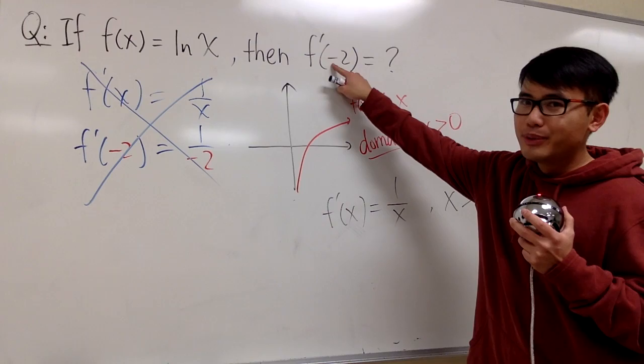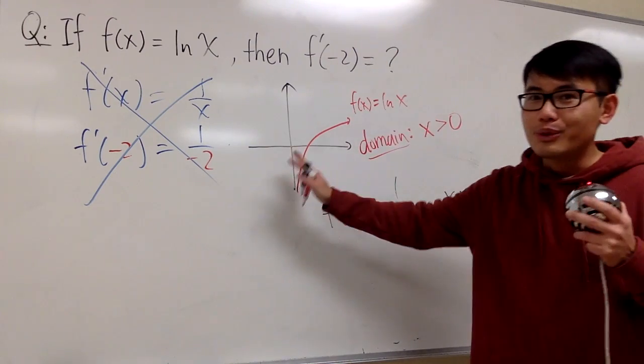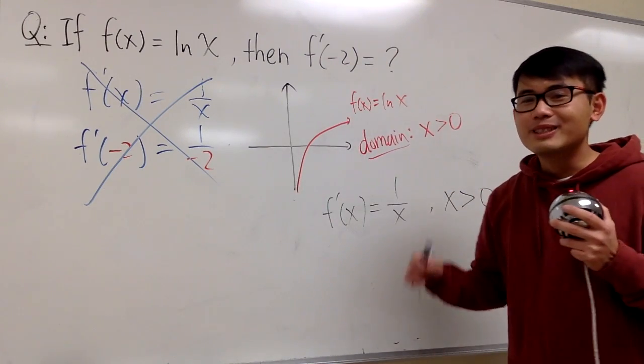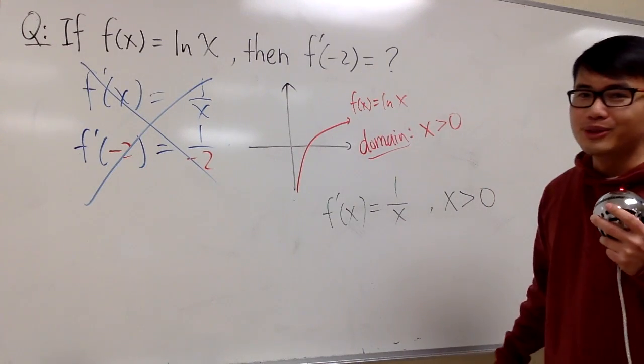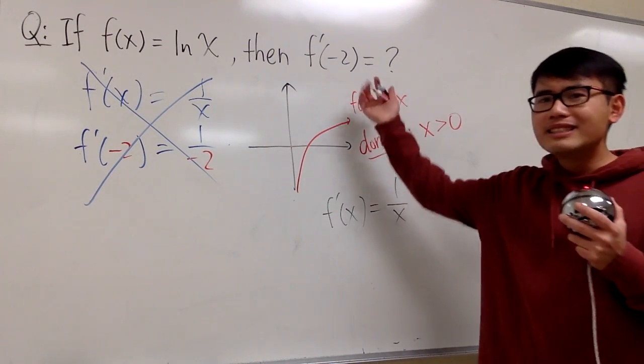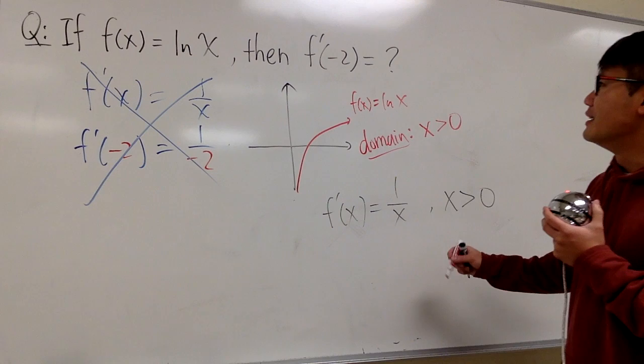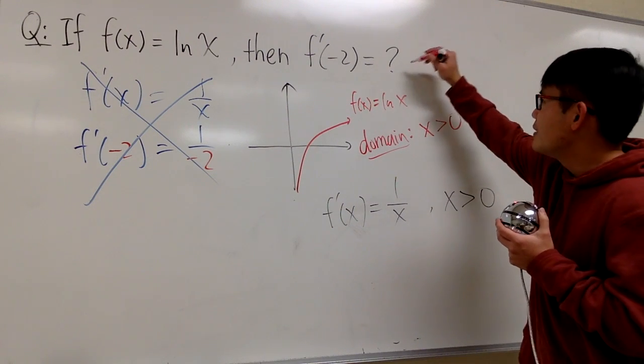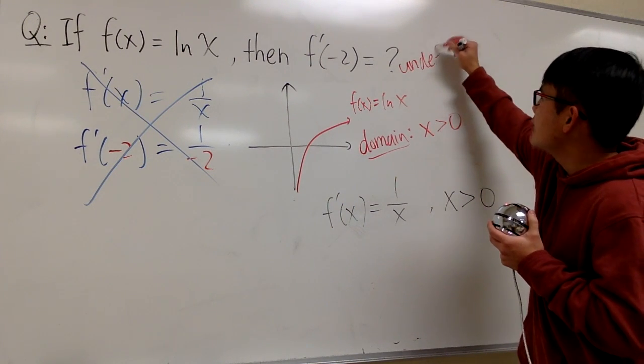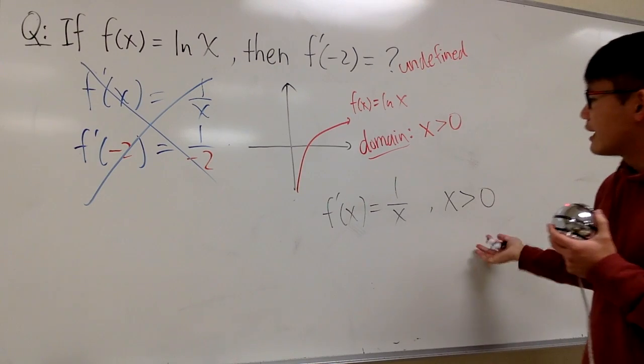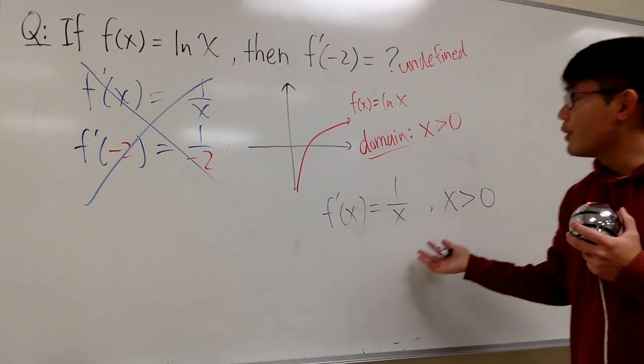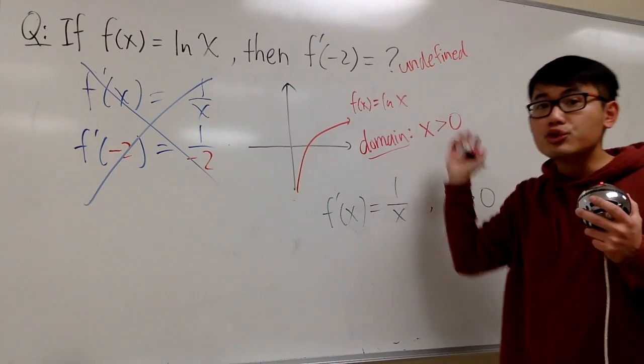If the x value is negative 2, this is not doable because we don't have the function in the first place. So, this is a tricky question, as I told you, right? And perhaps the best answer right here, we can say this is undefined, right? Because we cannot plug in negative value right here.